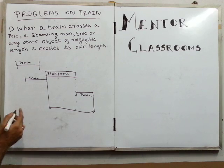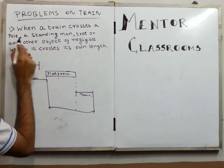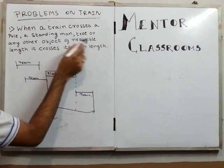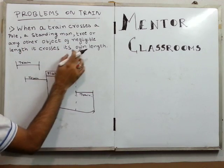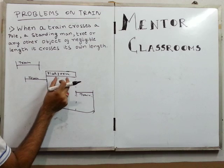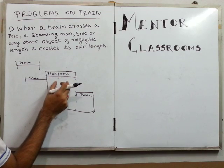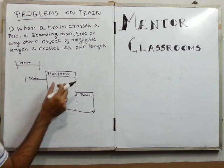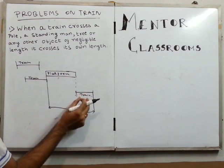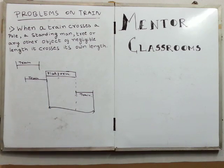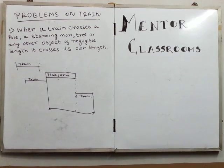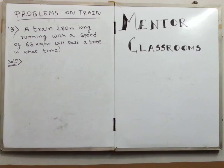Remember these two important formulas: when a train crosses a pole, a standing man, a tree, or any other object of negligible length, it crosses its own length; and when it crosses a platform, it crosses the length of the platform plus the length of the train.